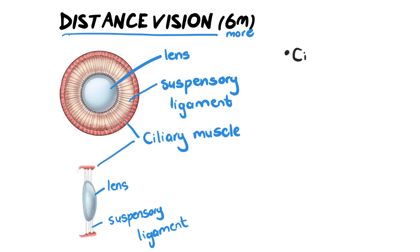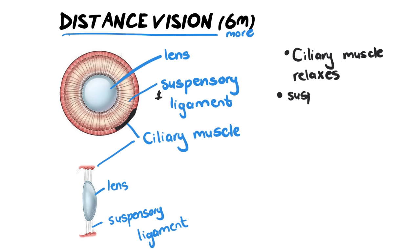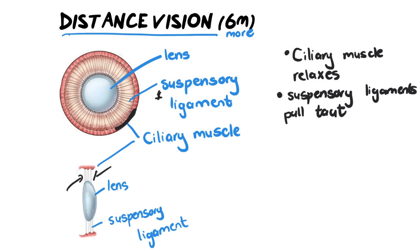When explaining distance vision, the first step is that the ciliary muscle relaxes. Looking at our image, here is our ciliary muscle — this outer ring of muscle — and it relaxes. Whenever that muscle relaxes, an opposite effect happens to the suspensory ligaments: the suspensory ligaments pull taut. Taut means they are pulling tight on one another, and that means the suspensory ligaments are pulling on the lens and are going to change its shape.